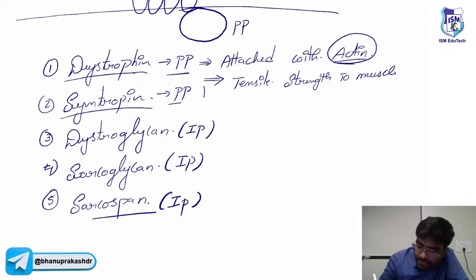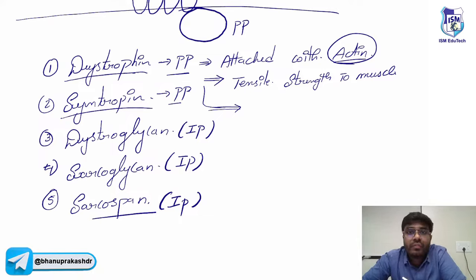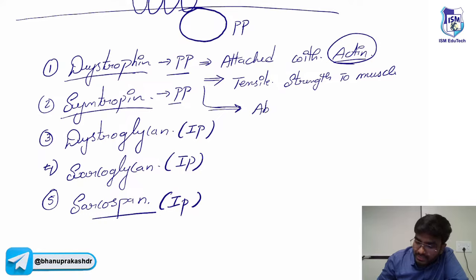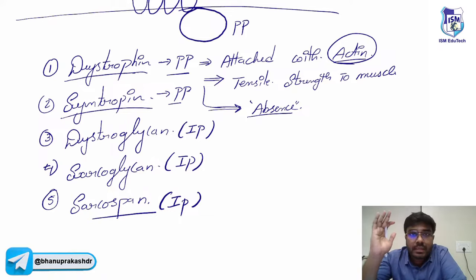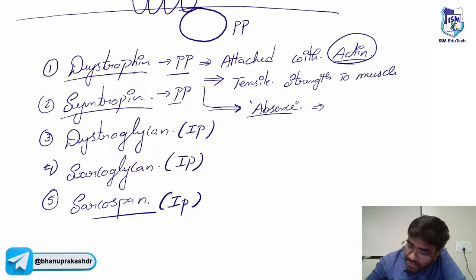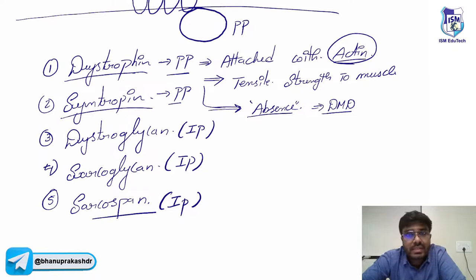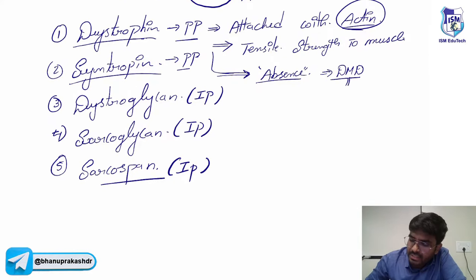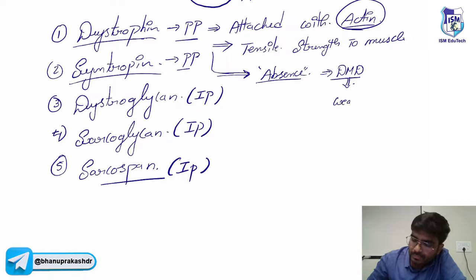If dystrophin is absent in a person because of a gene mutation — a dystrophin gene mutation causing complete absence — imagine a baby where dystrophin is completely absent in the muscles. That will cause a disease called Duchenne Muscular Dystrophy.